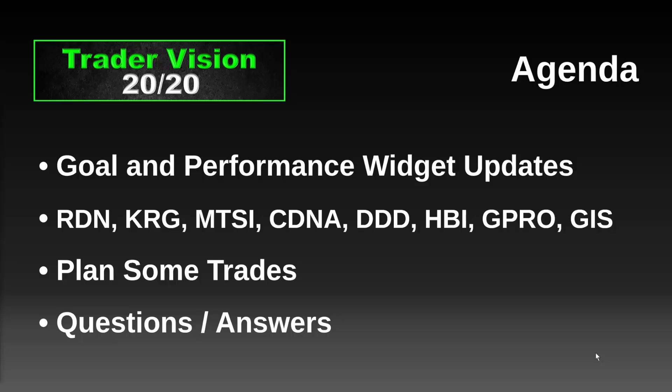I'm going to go through some changes we made, mostly the goal widget, but there are also some fixes for the performance widget — specifically the printing, which now works for all reports. I'm going to quickly blow through the trade plans and probably just the charts for the stocks that were opened in the feature trade idea blog. Let me pull this over for you.